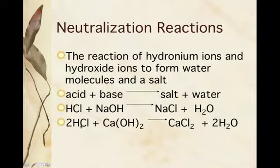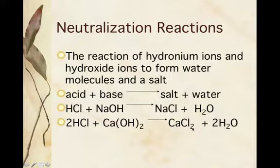Here we have two hydrochloric acid because it needs to be balanced. Hydrochloric acid plus calcium hydroxide gives us calcium chloride — this two is here because calcium is a two-plus charge — and then plus two water.